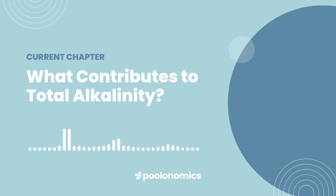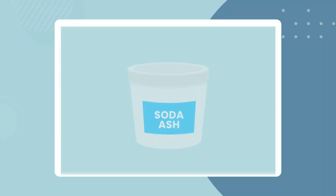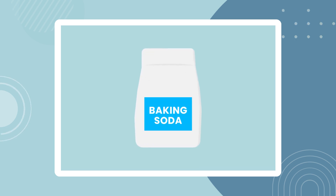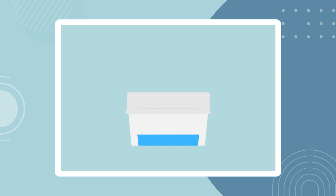For example, every time you raise your pH level with soda ash, you introduce more carbonates to the water, and every time you use stabilized chlorine tablets, you introduce more cyanurates. Perhaps the best example is baking soda. This is used to directly increase total alkalinity by adding more bicarbonates to the water, and it's also the primary ingredient in many alkalinity increasers.